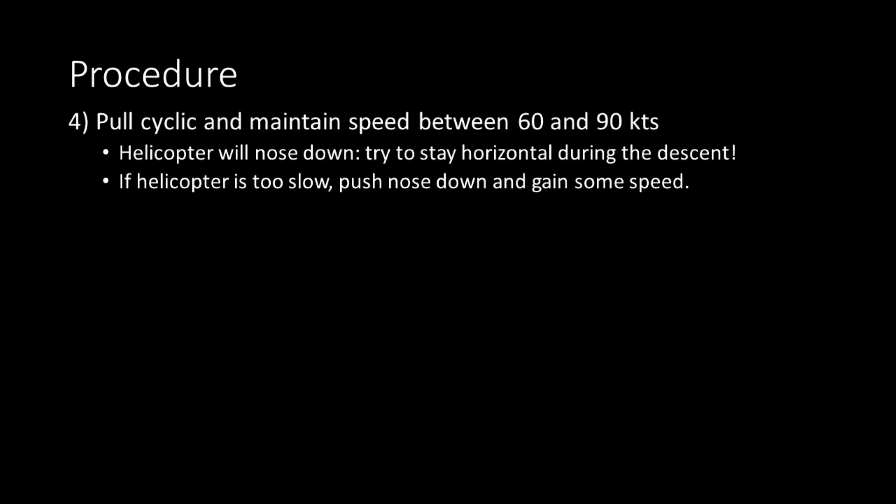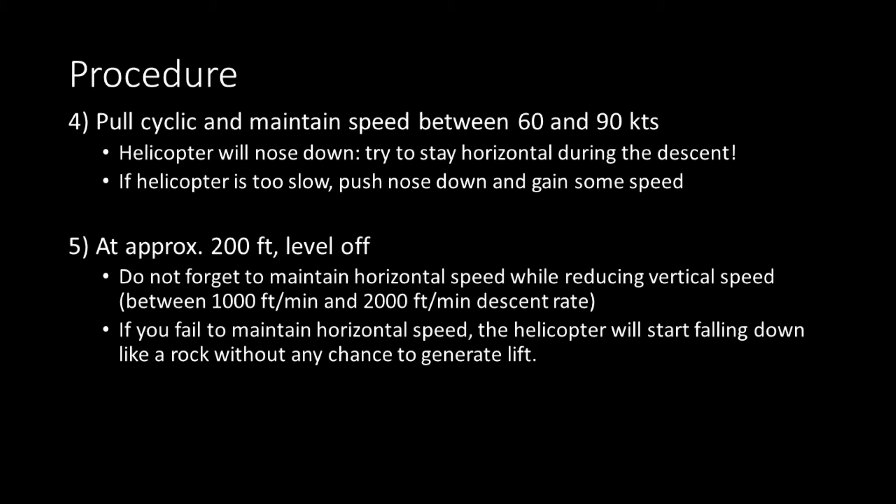Pull your cyclic towards you and maintain a horizontal speed between 60 and 90 knots — it's up to your personal preference. Try and stay horizontal during the descent. If you're going too slow, just slightly push the nose down and you'll be gaining speed. Once you've reached approximately 200 feet, level off. Reduce your vertical speed and try to stick to a descent rate between 1000 and 2000 feet per minute. If you fail to maintain horizontal speed, you'll just start falling down like a rock without any chance to generate lift whatsoever.